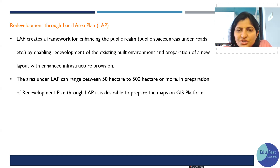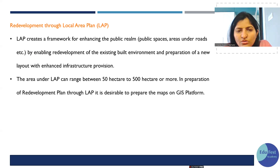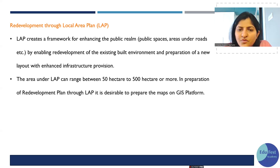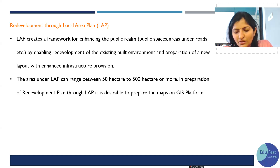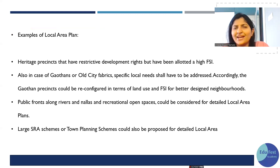Local Area Plans can range from 50 hectares to 500 hectares or more. In the preparation of redevelopment plans through LAP, we need to prepare GIS maps. Now, what are the different examples of Local Area Plans, and what is the exact procedure to prepare one?